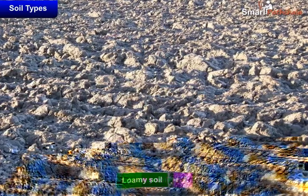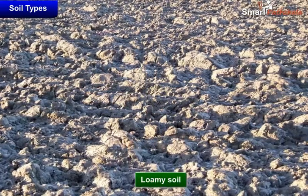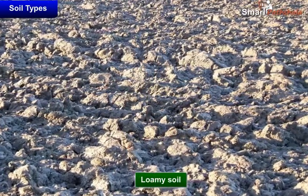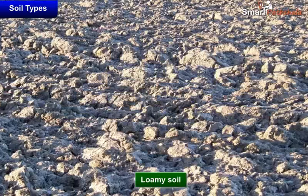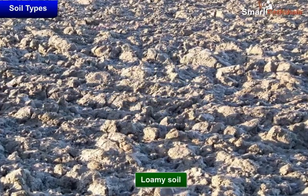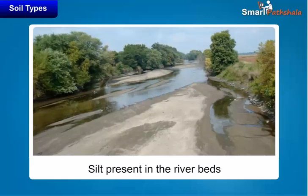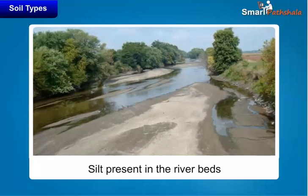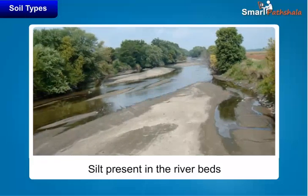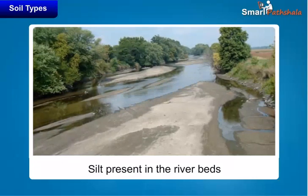Loamy soil is the best top soil for growing plants. Loamy soil is a mixture of sand, clay, and another type of soil particle known as silt. Silt occurs as a deposit in riverbeds. The size of the silt particles is between those of sand and clay. The loamy soil also has humus in it. It has the right water holding capacity for the growth of plants.